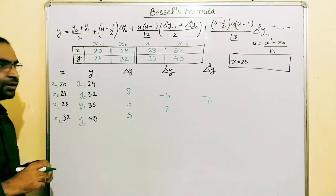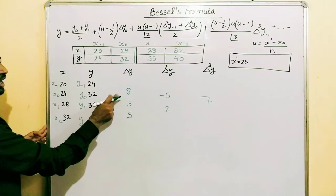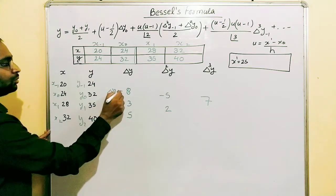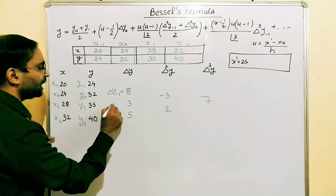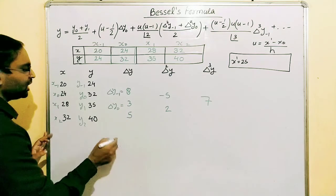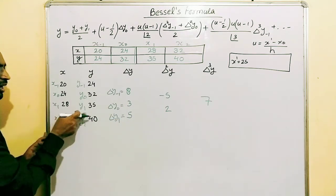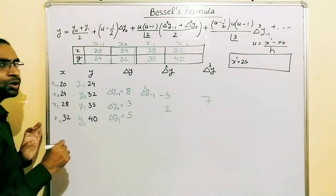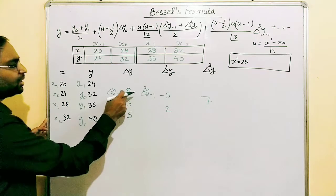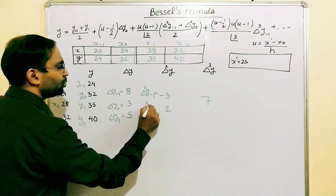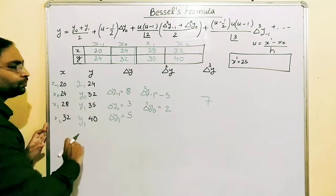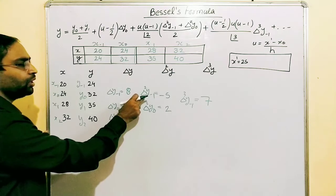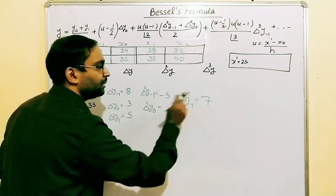Building the forward difference table: Δy₋₁ = 32 − 24 = 8; Δy₀ = 35 − 32 = 3; Δy₁ = 40 − 35 = 5. Second differences: Δ²y₋₁ = 3 − 8 = −5; Δ²y₀ = 5 − 3 = 2. Third difference: Δ³y₋₁ = Δ²y₀ − Δ²y₋₁ = 2 − (−5) = 7.